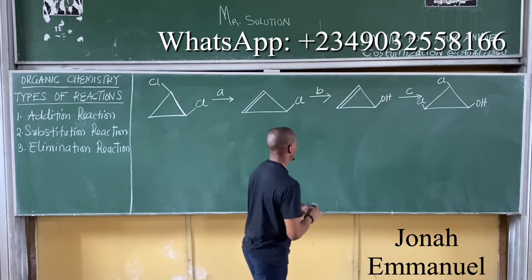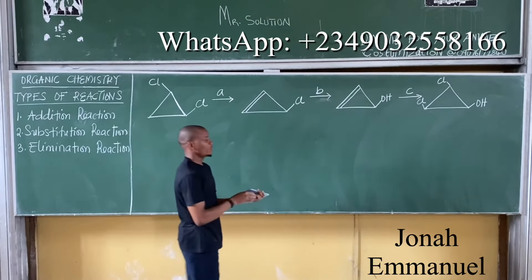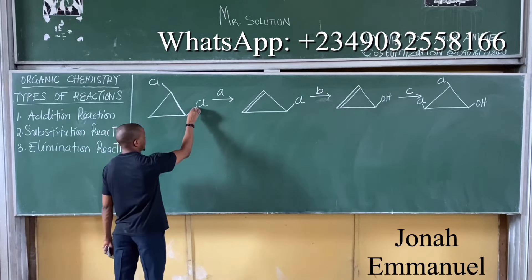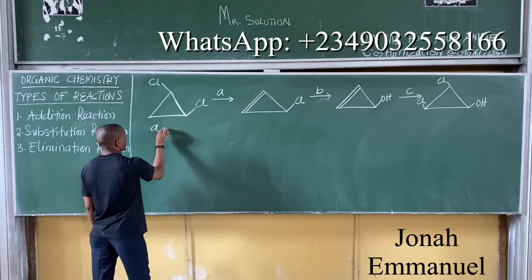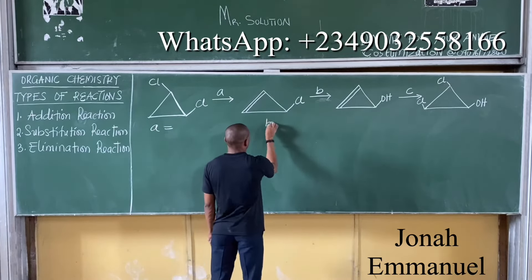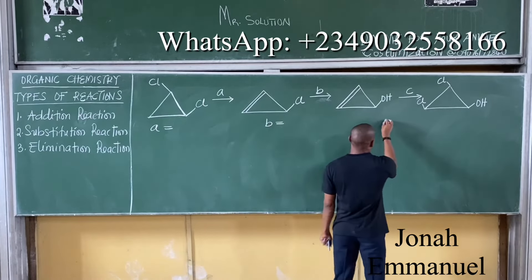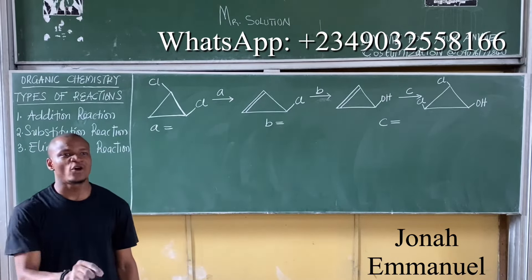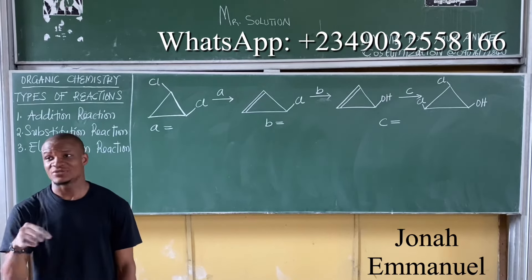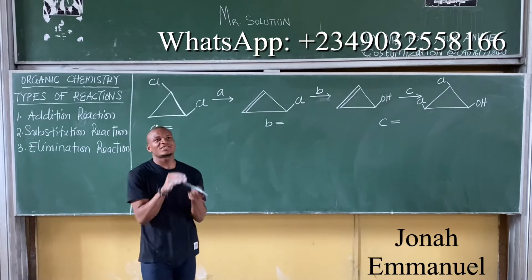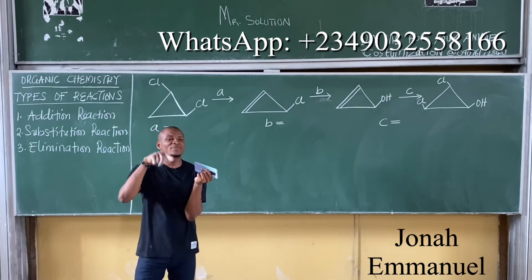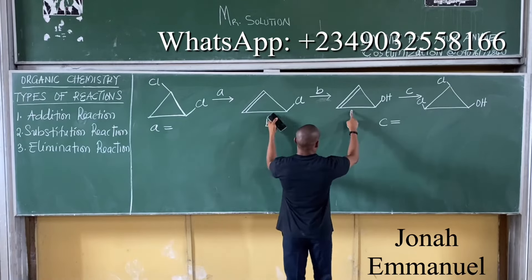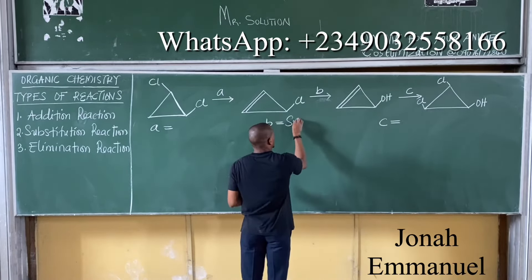One of the examples is addition, one of them is substitution, one of them is addition. Which is which? I always advise you start with substitution first — it is the easiest to identify. For substitution, the hydrocarbon retains its form and only the substituent is replaced. Which of them represents that? B. Look at B — this one is being replaced. So B is substitution.